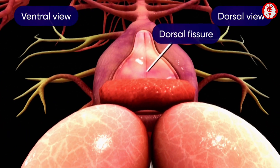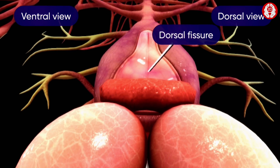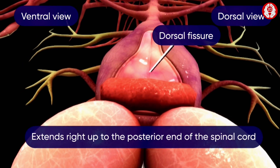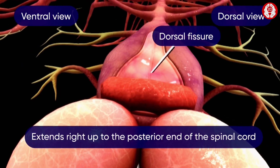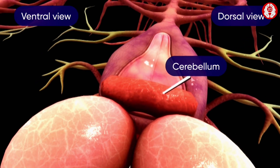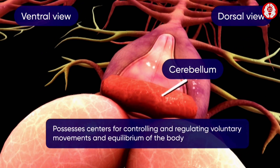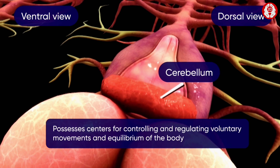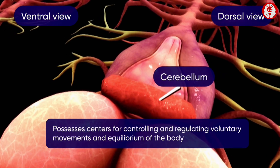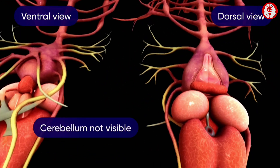A longitudinal dorsal fissure runs along the median side of the dorsal wall, extending right up to the posterior end of the spinal cord. The cerebellum is prominently seen in the dorsal view of the brain. It possesses centers for controlling and regulating voluntary movements and the equilibrium of the body, and is not visible in the ventral view.